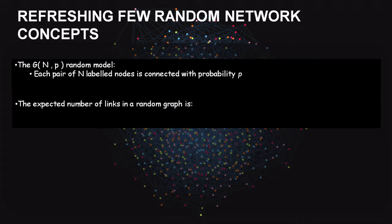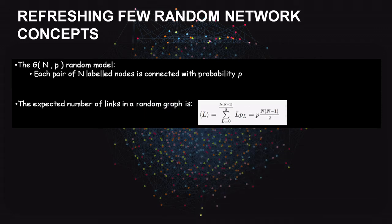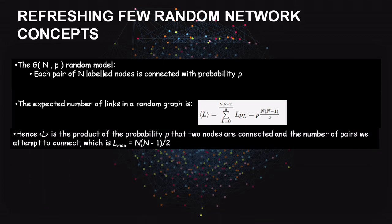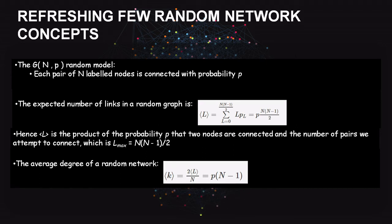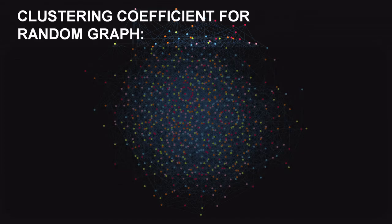The expected number of links in a random graph is given by p · n(n−1)/2, where p is the probability and n(n−1)/2 is the maximum number of possible links. The average degree of a random network is computed as 2L/n, where L is the expected number of links and n is the number of labeled vertices.